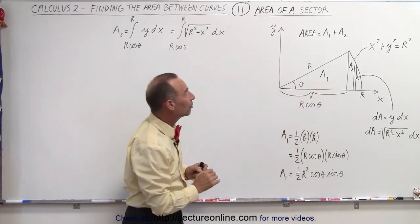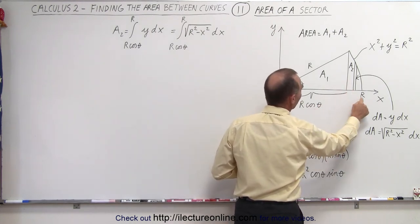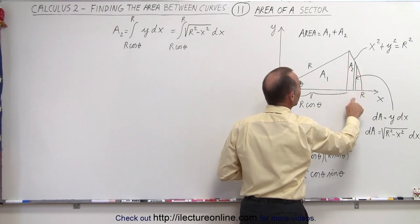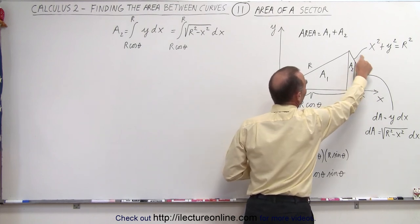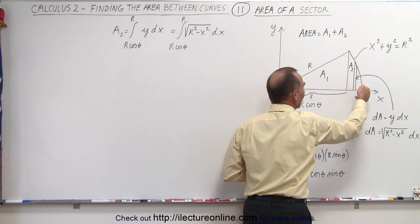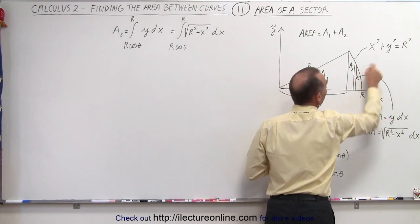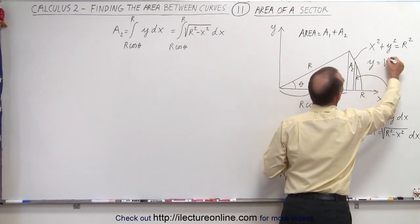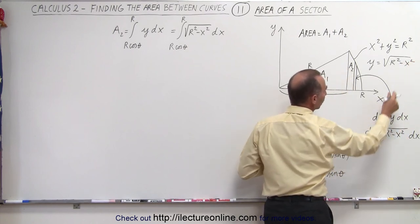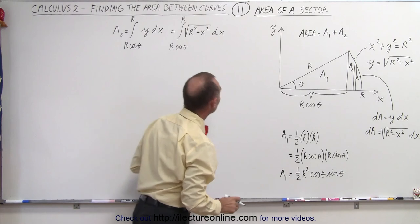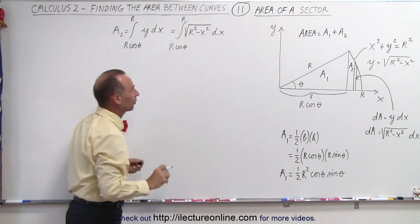We will need integration for the second area, A2, where we're going to integrate from x equals r·cosθ to x equals r over this region. Notice that the height of that area element is going to be y. Since the edge is defined by an equation of a circle, y is simply equal to the square root of r² minus x². So the area element dA is this times dx, and our integral from r·cosθ to r of y dx becomes equal to that.